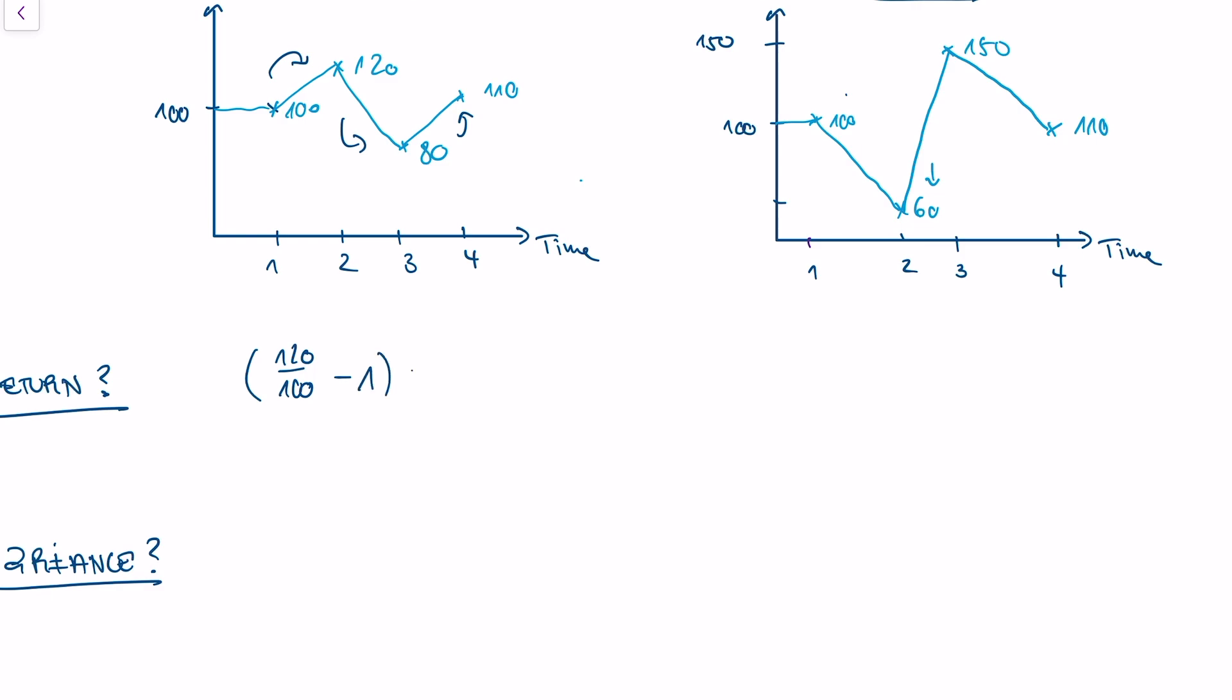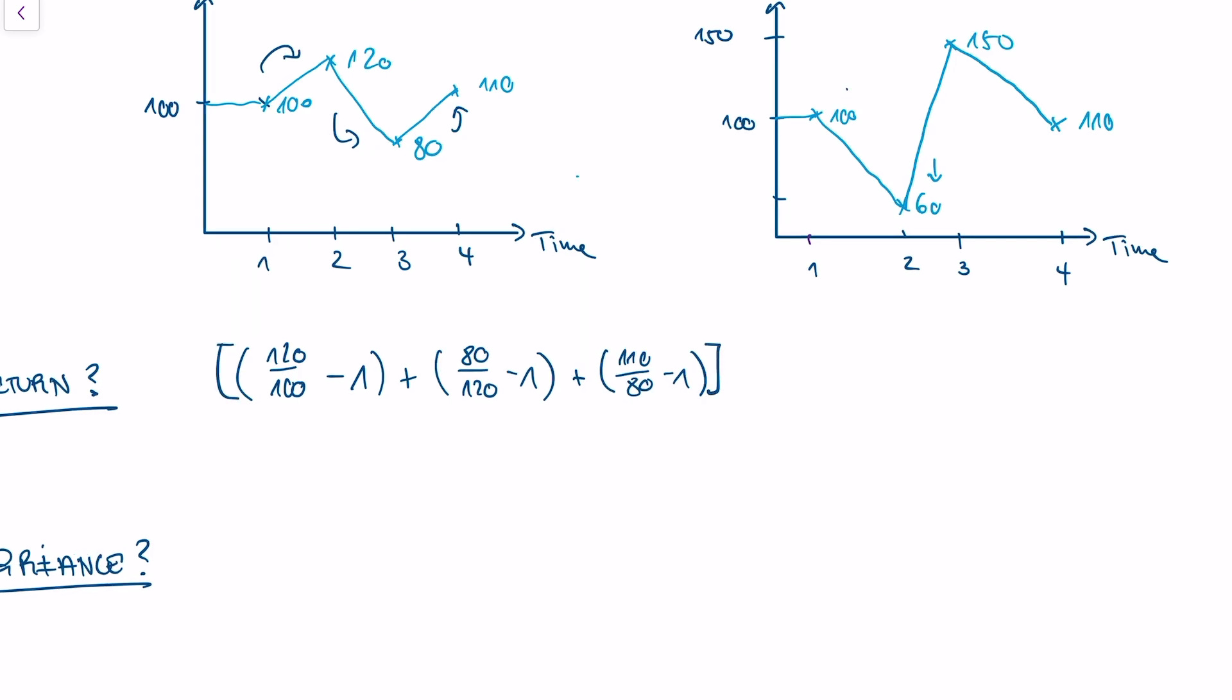So the average net return for my first jump is 120 divided by 100, and to make it net I subtract 1. Then I have the second jump, we jump to 80. And then we have the third jump, which is 110 divided by 80 minus 1. And because we want to take an average return, I need to divide by 3, because I have 3 jumps.